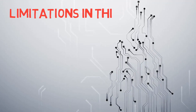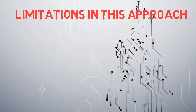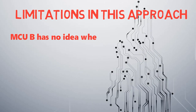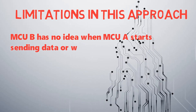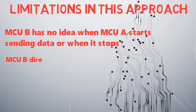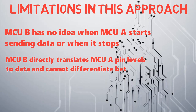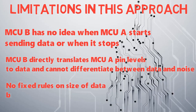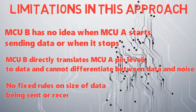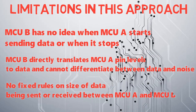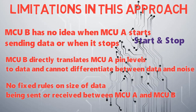This approach has some limitations. MCU B has no idea when MCU A starts sending data or when it stops. MCU B directly translates pin levels to data and cannot differentiate between data and idle states, and there is no knowledge of the size of data being sent or received. These limitations can be avoided by adding start and stop bits, which provides synchronization, and a parity bit to avoid noise errors.